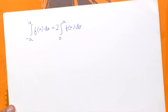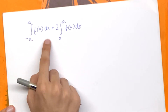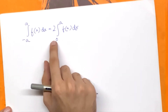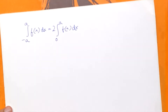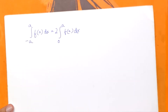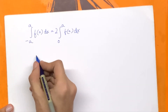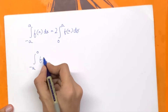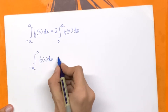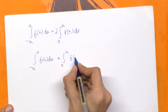Let's look at this formula for an even function f(x): the integral from minus a to a of f(x) dx is the same as two times the integral from 0 to a of f(x) dx. Now let's look at the proof. We can write this integral as the integral from minus a to 0 of f(x) dx, plus the integral from 0 to a of f(x) dx.